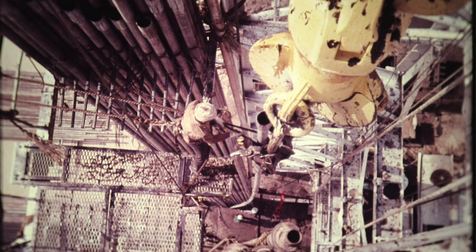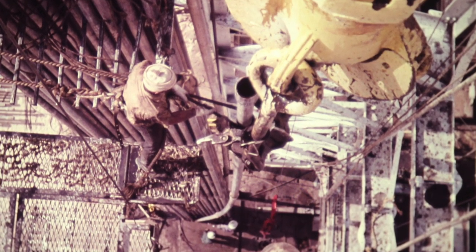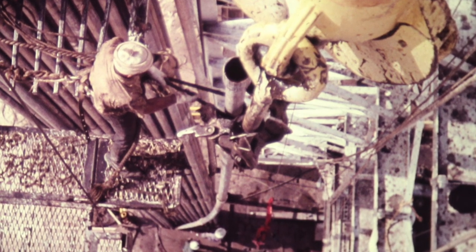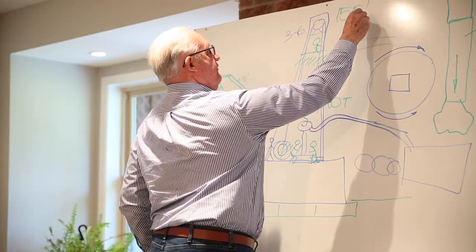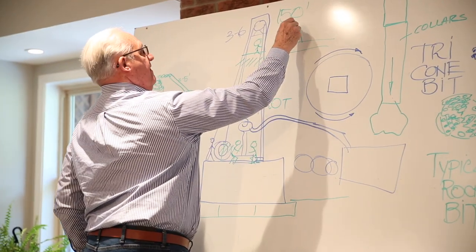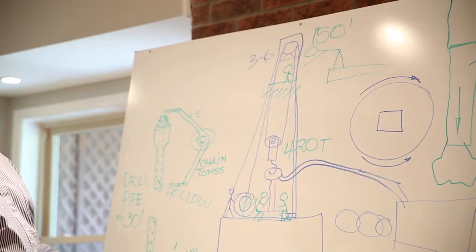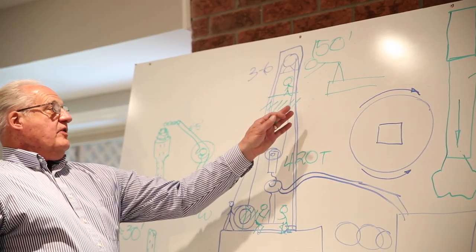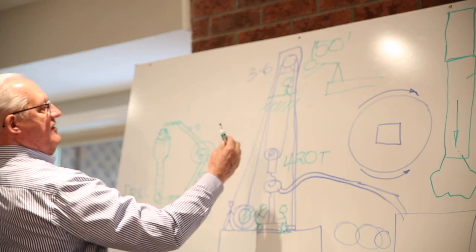Now the guy that's really got the dangerous job is the derrick man. He takes hold of what they call elevators that are attached to the drill pipe. And when they're coming out of the hole, he has to stand on the monkey board and reach way out. He's got special belts on, safety belts, but he leans way out beyond that board.